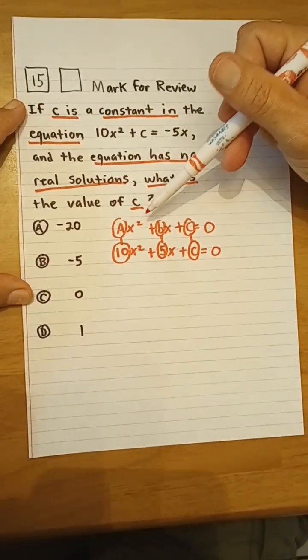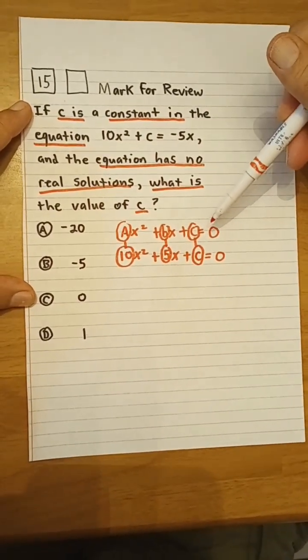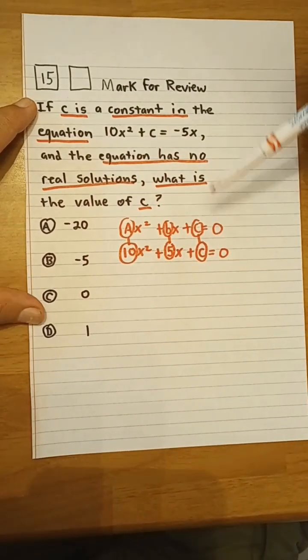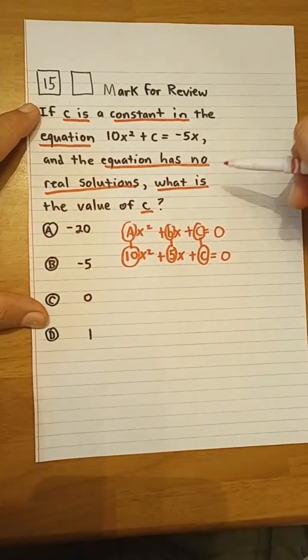I've written down here the equation in standard form and identified a, b, and c so we can get through it a little bit more quickly.